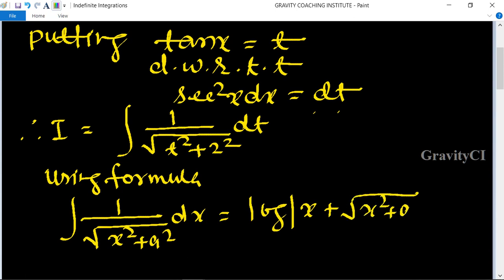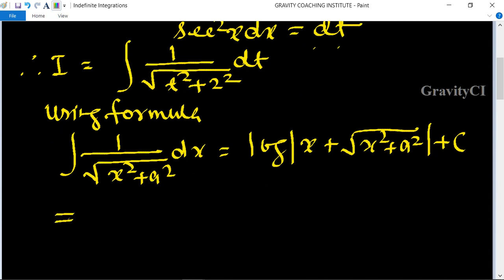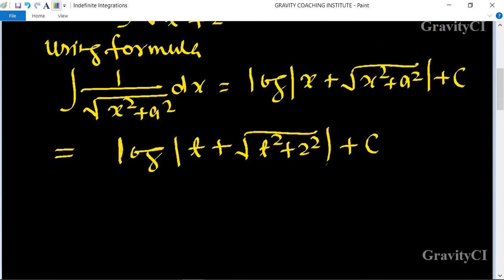So now we use this formula, it will become log of t plus root under t² plus 2² plus c. And the value of t is tanx, so it equals log of tanx plus root under tan²x plus 4 plus c.